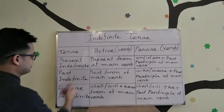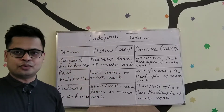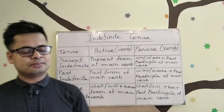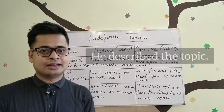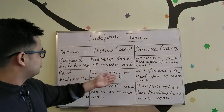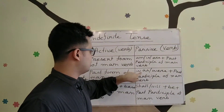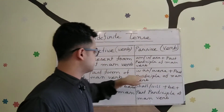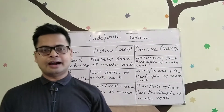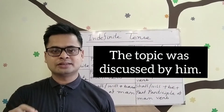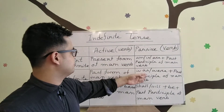Let's talk about past indefinite tense. In active voice, we use the past form of the main verb. For example: 'He described the topic.' 'Described' is an example of the past form. In passive voice, we use 'was/were' plus the past participle of the main verb. For example: 'The topic was described by him.' 'Was described' is the verb form used when making passive voice.